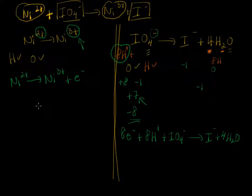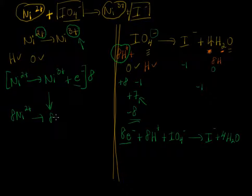The final step, step 6 here, is to find the common multiple. So there's 8 electrons being consumed and only one electron being produced, so we need to multiply all coefficients in this chemical equation by 8. That gives us this equation here: 8 nickel 2 plus goes to produce 8 nickel 3 plus plus 8 electrons.